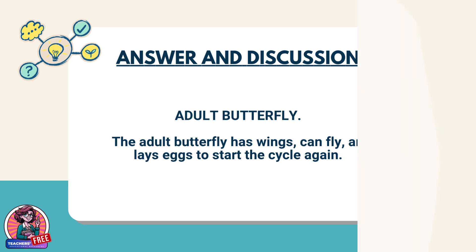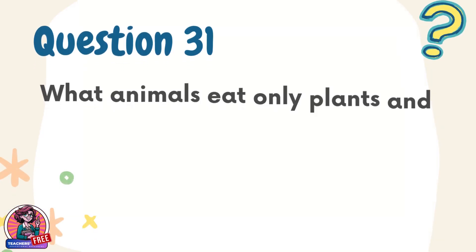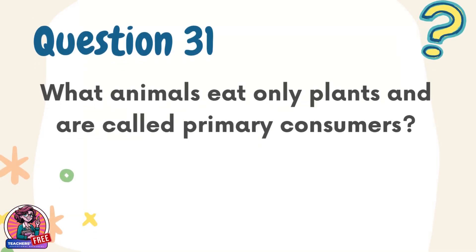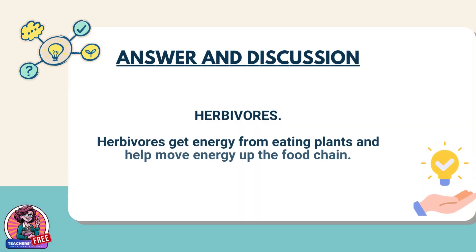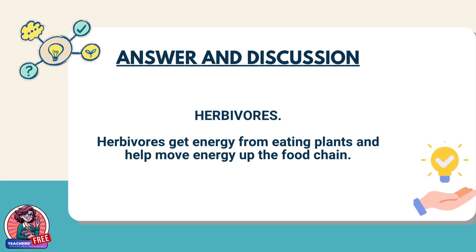Question 31. What animals eat only plants and are called primary consumers? Answer: Herbivores. Herbivores get energy from eating plants and help move energy up the food chain.